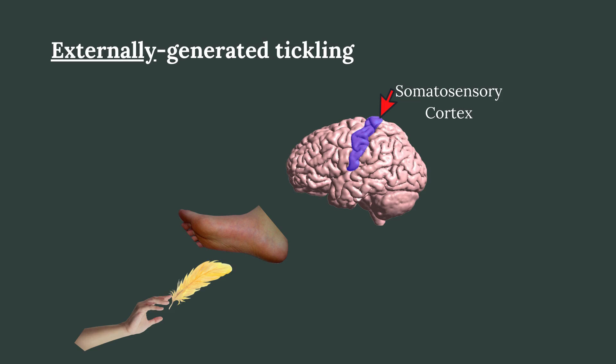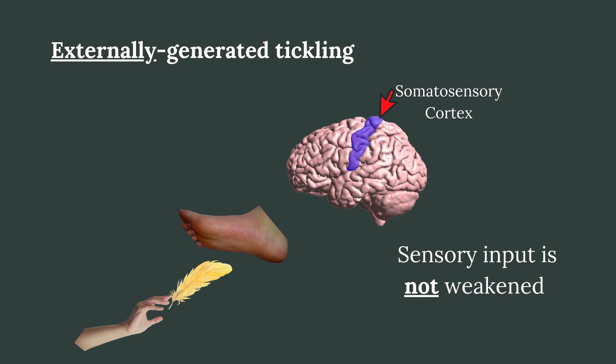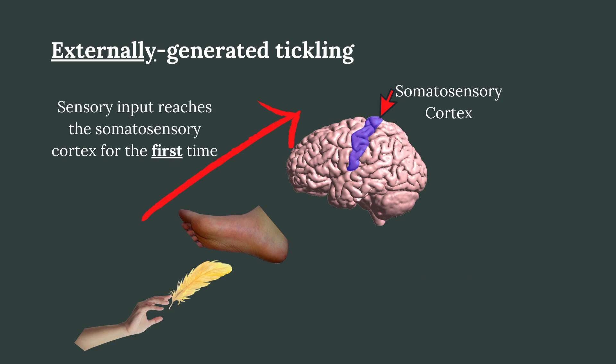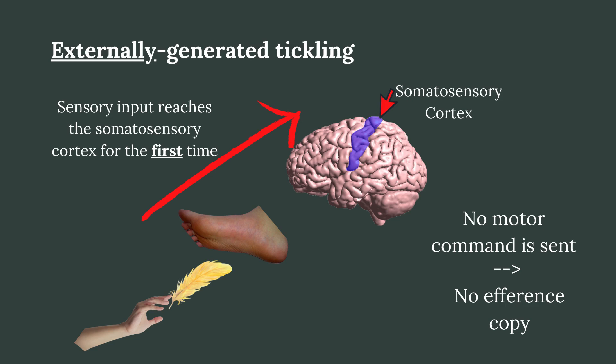When someone else is tickling us, the tickling sensation will not be weakened. This is because the sensory stimulation on our skin comes as a surprise. The sensory input that travels to the somatosensory cortex reaches this brain region for the first time. Because we didn't produce the physical act of tickling, no motor command was sent to our hand, and therefore no efferent copy was made to generate a forward model prediction. Thus the sensory information from the tickling is not weakened, which leads to the ticklishness being felt.